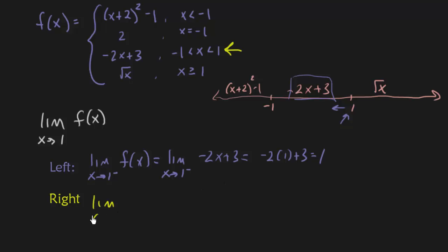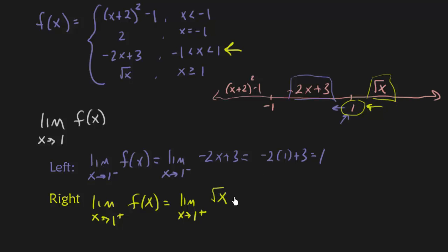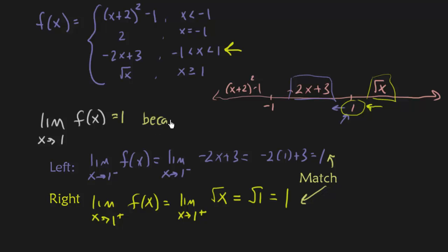Now for the right-hand limit approaching 1, I go back to that number line. Coming in from the right of 1, the function in that region is the square root of x. Plugging in 1 gives the square root of 1, which is 1. Since both the left and right-hand limits match, the general limit exists and equals 1. You can write an explanation saying the limit equals 1 because the left and right limits are equal, and as long as you have that work shown, you'll be fine.